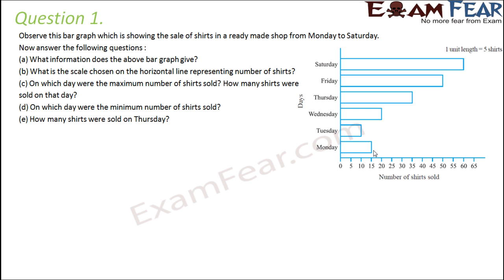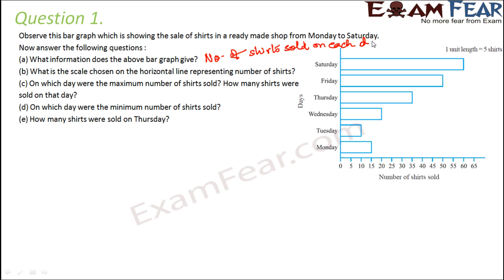That means how many shirts are sold on each day — like Monday, 15 shirts were sold; on Tuesday, 10 shirts were sold. So this tells us the number of shirts sold on each day.